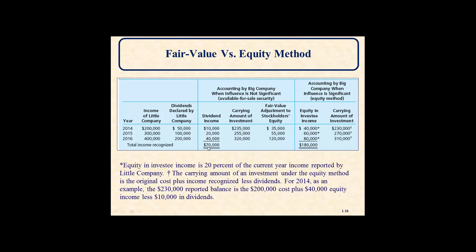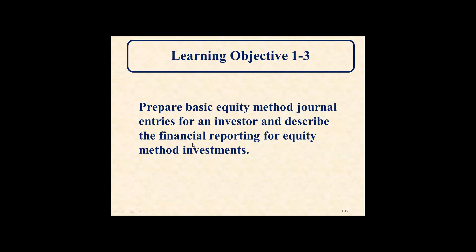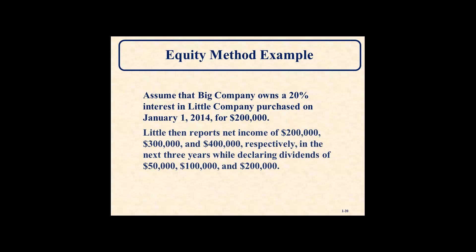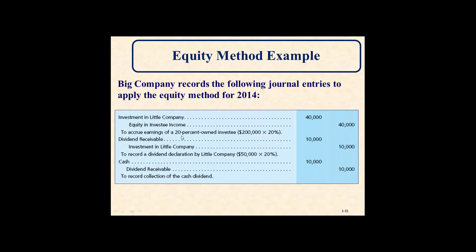It's easier to see these worked out in Excel. In the example, Big Company owns 20% of Little Company, purchased January 1, 2014 for $200,000. Little Company reports net income of $200,000, $300,000, and $400,000 in the next three years, and declares dividends of $50,000, $100,000, and $200,000. Big Company records 20% of income by debiting the investment account and crediting equity in investee income. For dividends, you debit dividend receivable and credit the investment account when declared, then debit cash and credit dividend receivable when received.